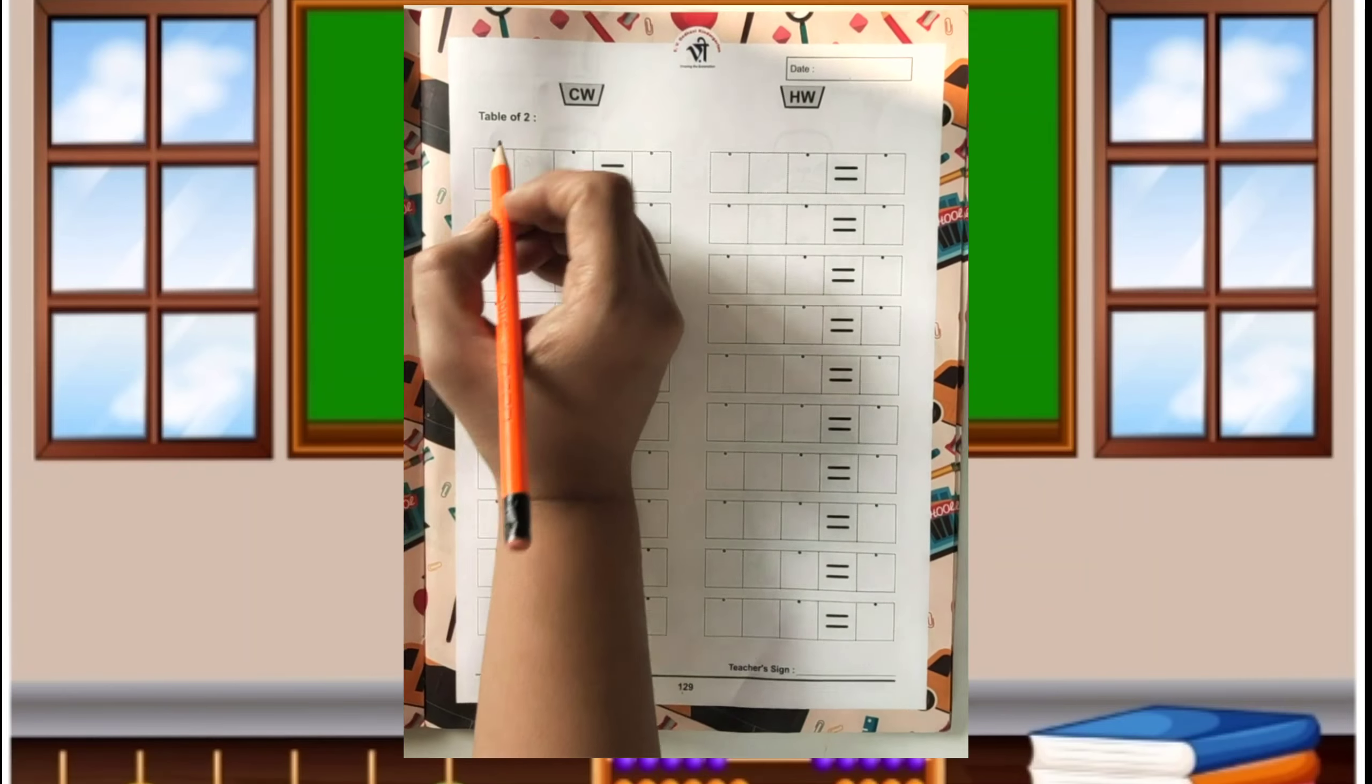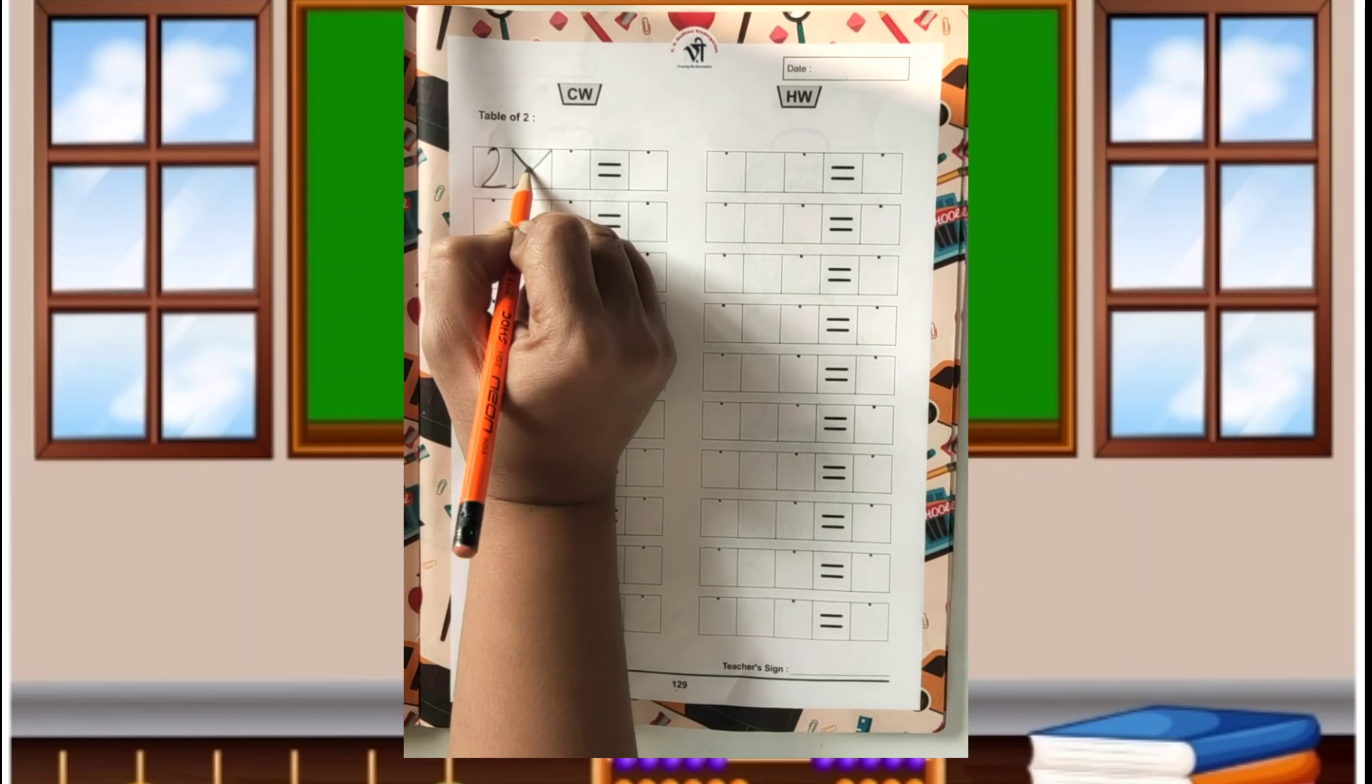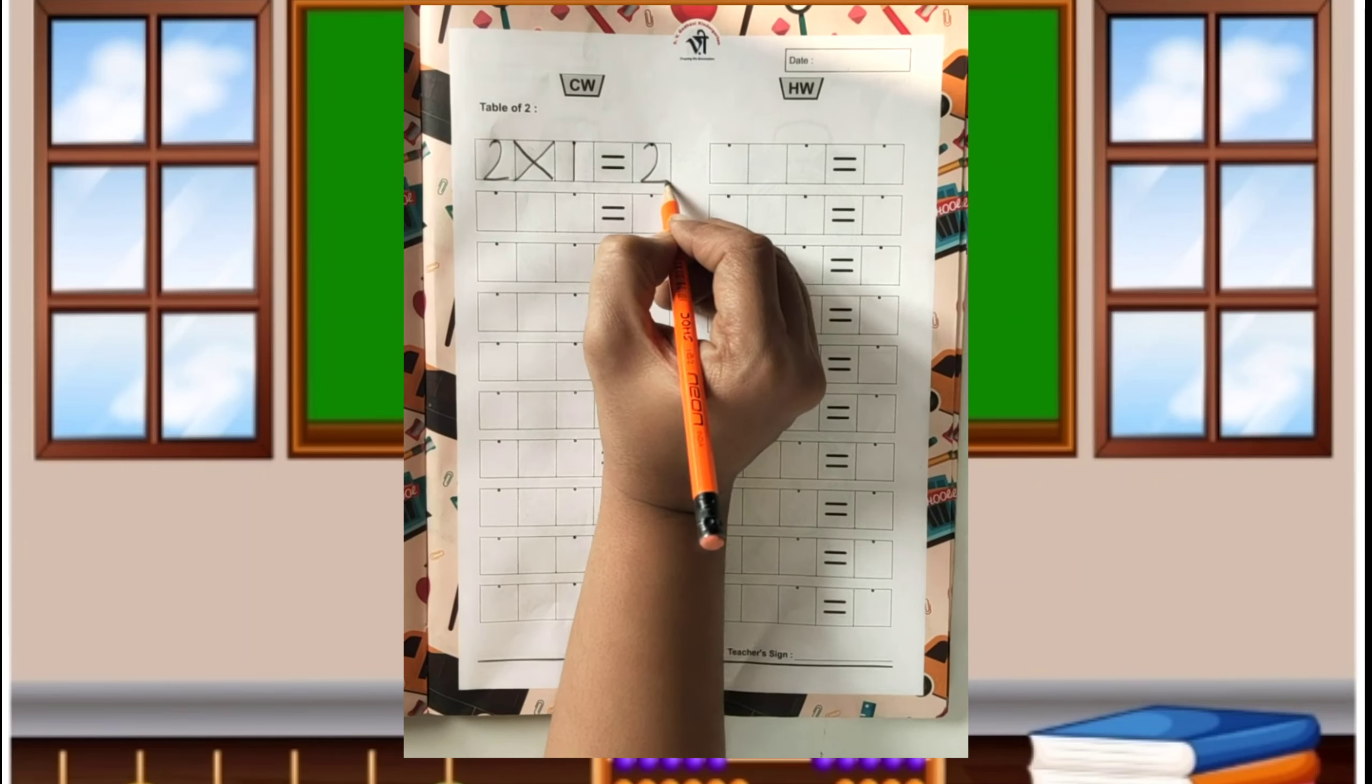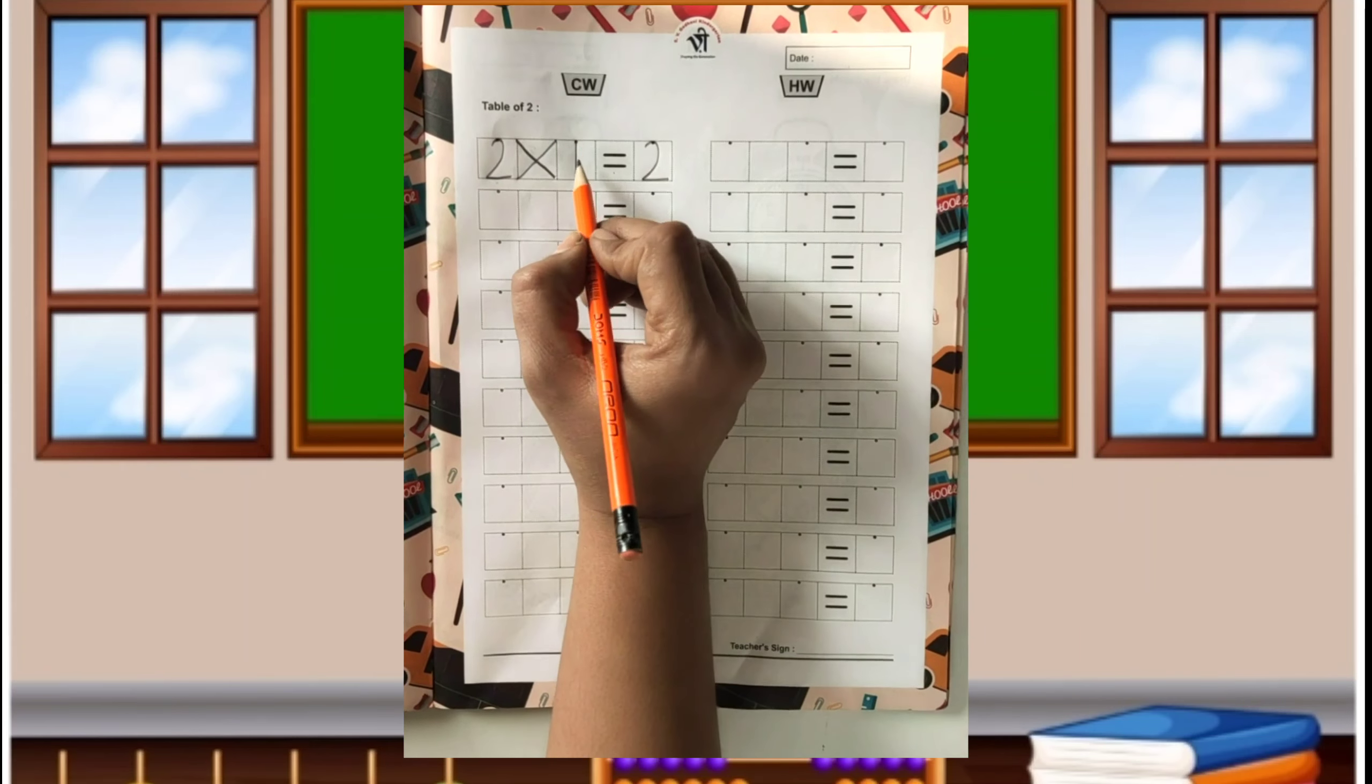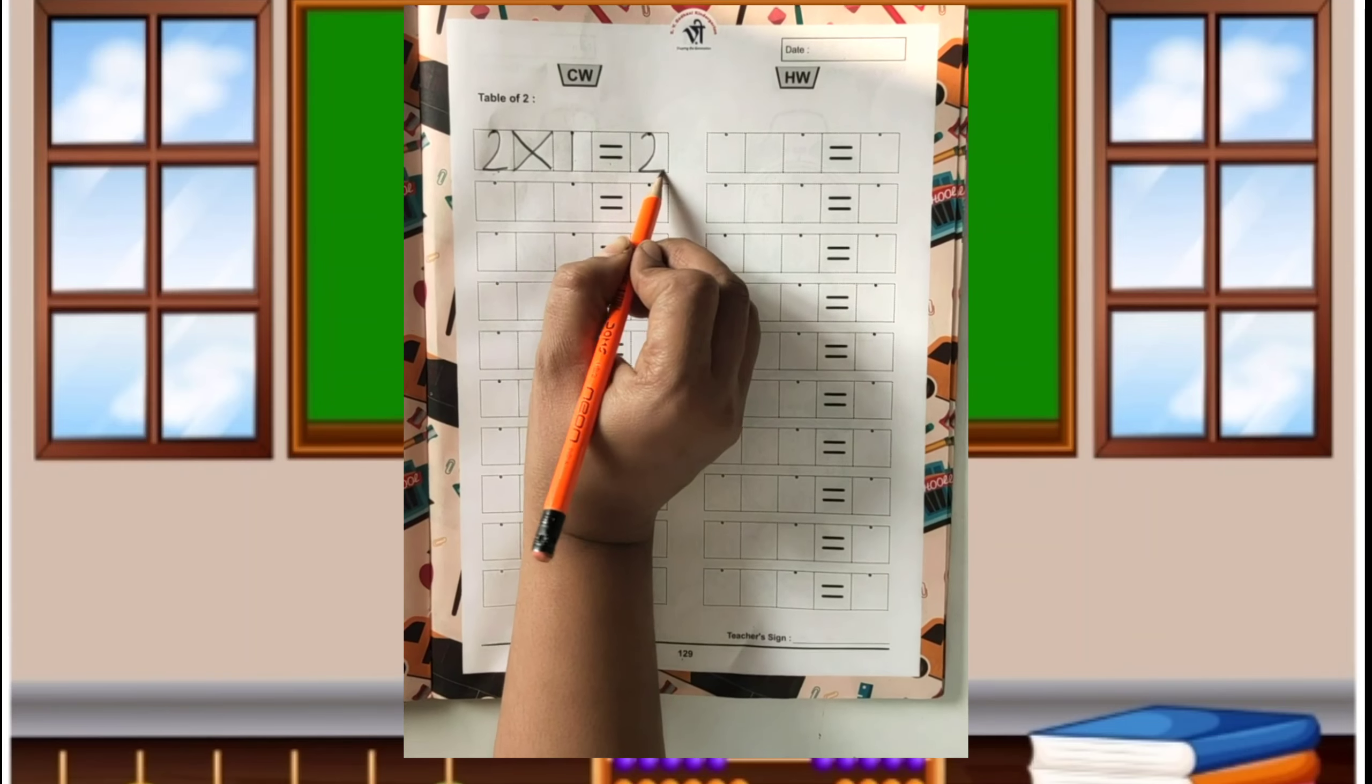Table of 2. 2-1's are, this is multiplication sign, 1's are 2, this is equal to sign, 2 multiplication sign 1 is equal to 2. 2-1's are 2.